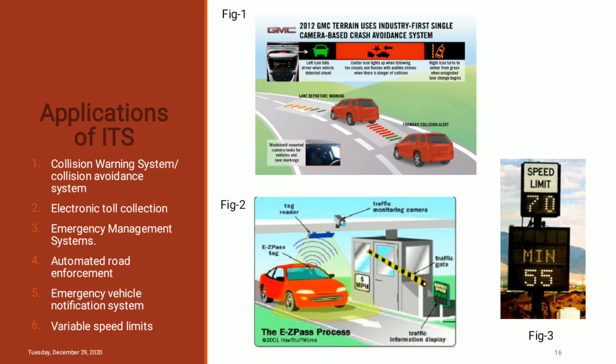The fourth one is automatic road enforcement. A traffic enforcement system consisting of cameras and vehicle monitoring devices is used to detect and identify vehicles disobeying speed limits. The fifth one is the emergency vehicle notification system, which provides advance warning to motorists of traffic jams, accidents, and other emergency situations. The sixth and last one is the variable speed limit system, which usually consists of stationary detectors to estimate traffic status and variable message signs at predefined locations for applying new speed limits.